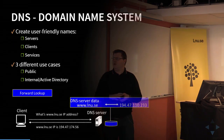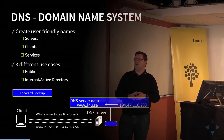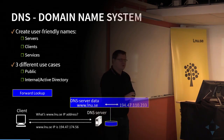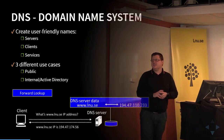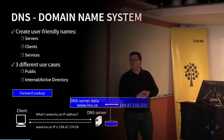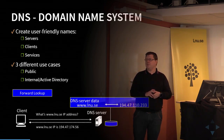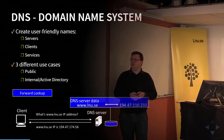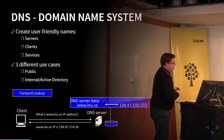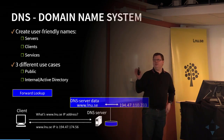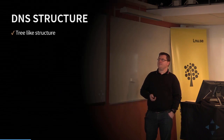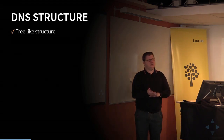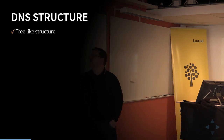Here you see a typical forward lookup. We have a client that wants to know the address for www.lnu.se. It has a DNS server configured, so it will ask that DNS server: do you have the address for this domain name? If it does, it will send a reply to the client with that address. This is the bare essence — this is called a forward lookup.